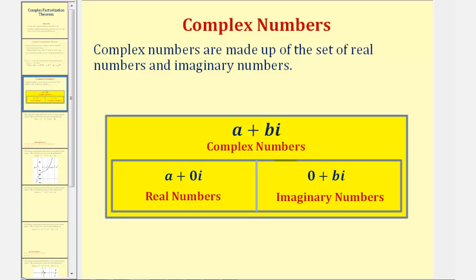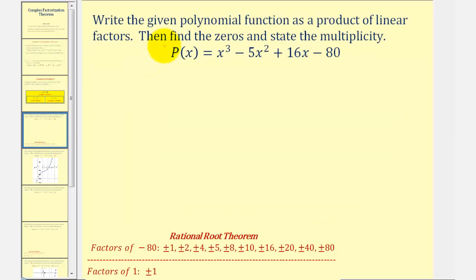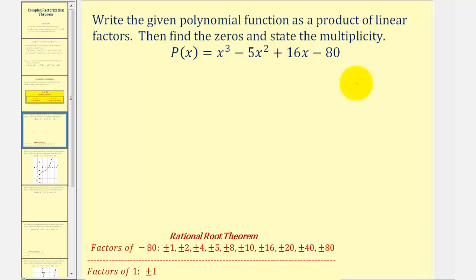Let's take a look at our first example. Here we want to write the given polynomial function, which is a degree three polynomial function, as a product of linear factors, or factors of degree one, and then find the zeros and state the multiplicity of each. We know from our previous lesson on the rational roots theorem that if this polynomial function does have real rational roots, it must be a ratio of the factors of the constant term — in this case negative 80.